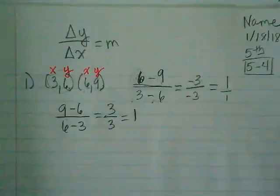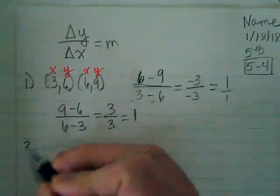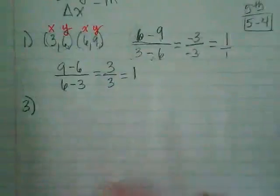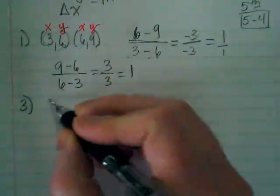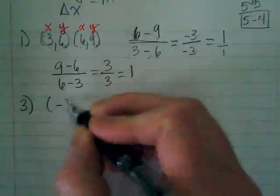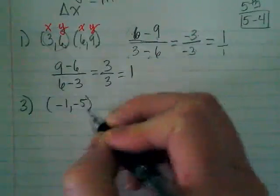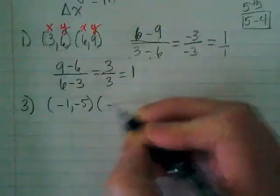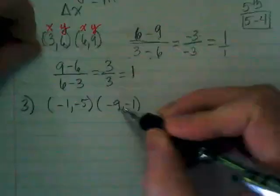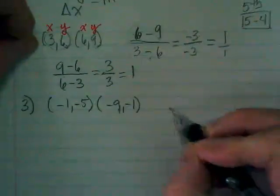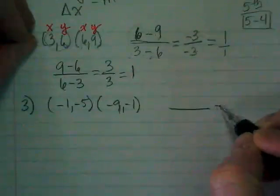I like positives. I like positives too. But we're going to skip to number 3 and do a negative. Because the formula has a negative in it, when there's negatives in the ordered pairs, it can look a little confusing. And I want to make sure to do one of those with you. So let's first write the ordered pair down. It's negative 1, negative 5. And negative 9, negative 1.